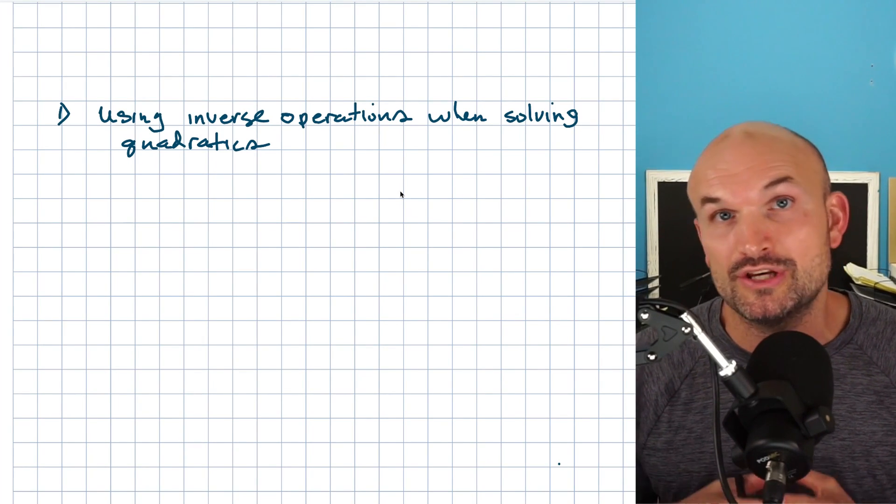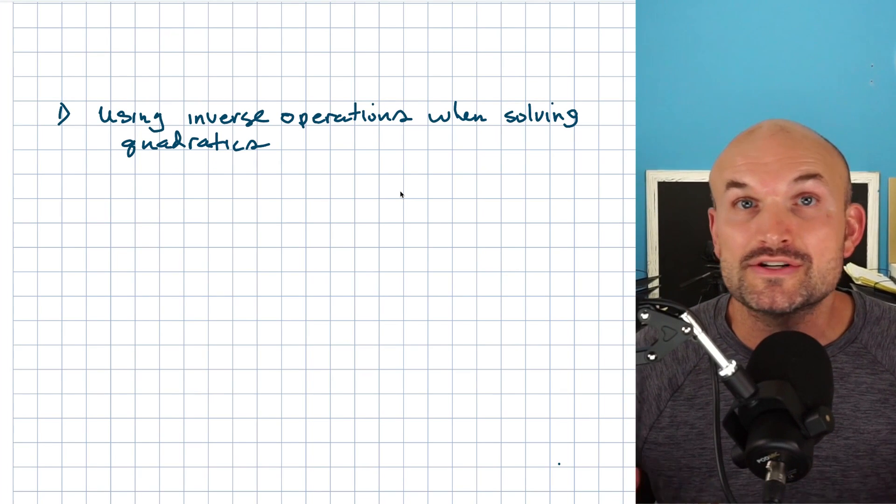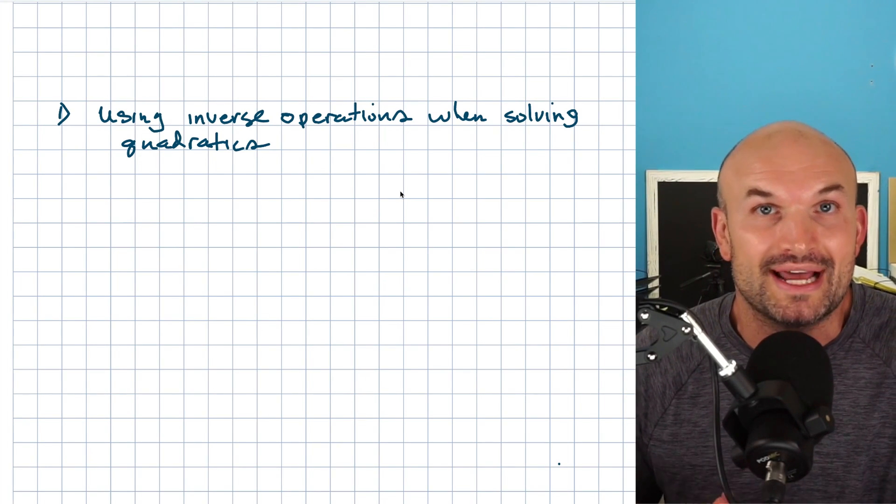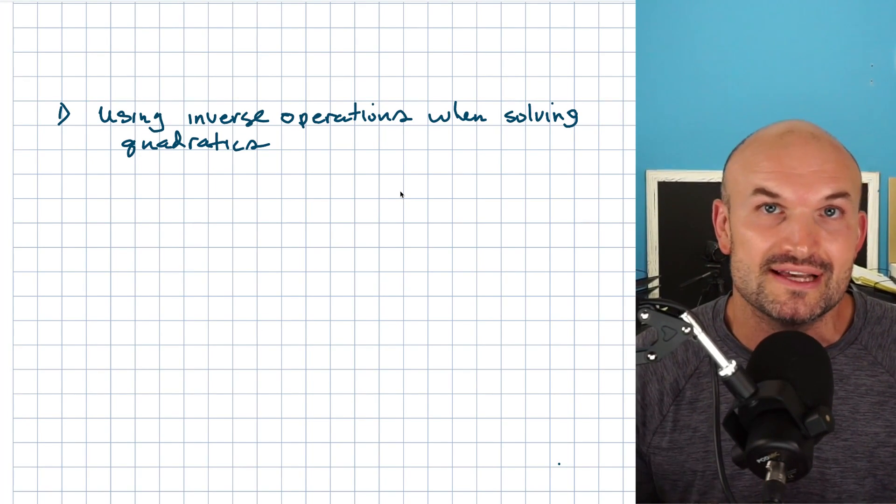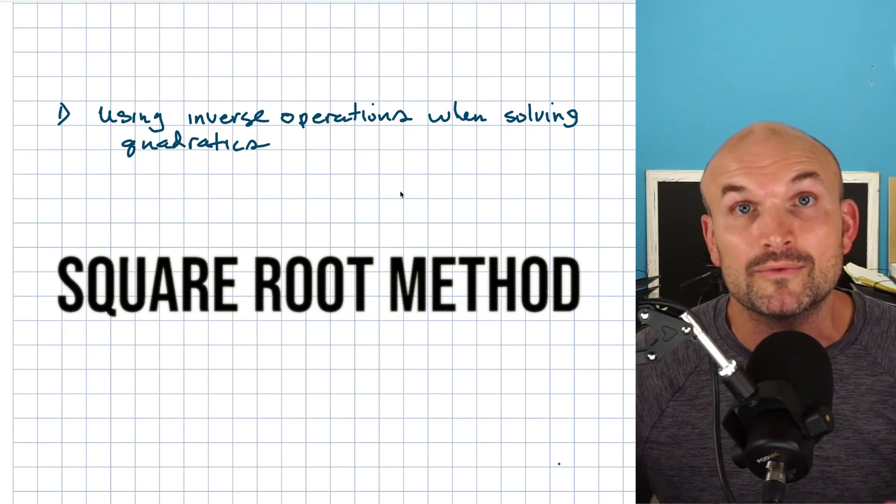And then typically one of the first equations that we use to solve with quadratics is when there's only one X. And when you only have one X, you can use inverse operations. That's what we call using the square root method.